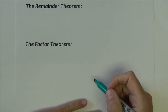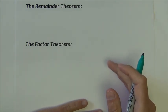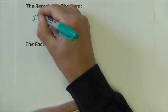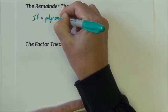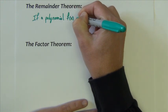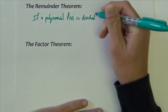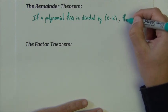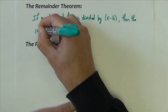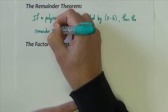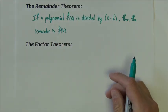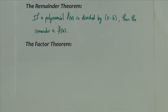Alright, next I want to go over a couple of theorems, and we'll do a couple of example problems to illustrate each one. Now the remainder theorem and the factor theorem. The remainder theorem says that if a polynomial f of x is divided by x minus k, then the remainder is f of k. Again, we're going to do an example of that to kind of illustrate exactly what that means.